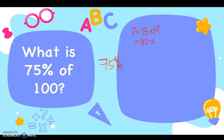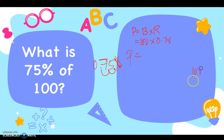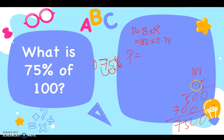Remove the percent symbol and put the decimal point at the end of the number. Since there is no decimal point in between, the decimal point is at the end. Then move two decimal places to the left. Therefore, 75% equals 0.75. Now multiply: 100 times 0.75. Count two decimal places — the answer is 75. So 75 is 75% of 100.